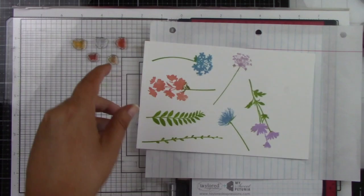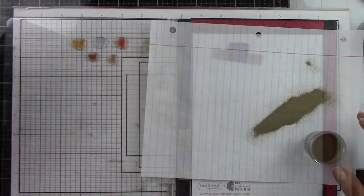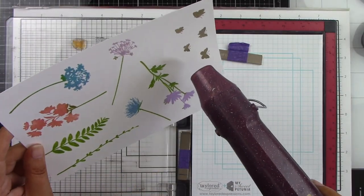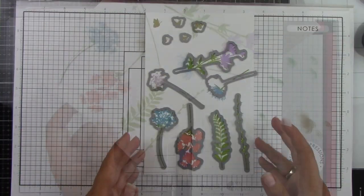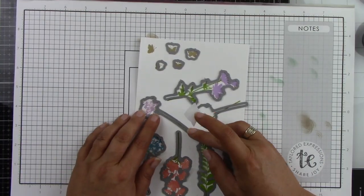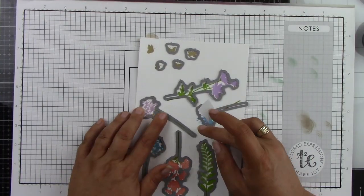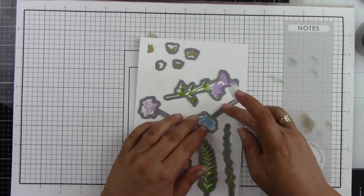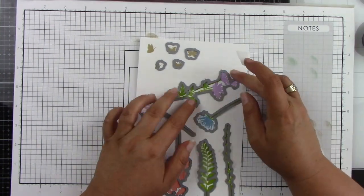I'm going to stamp those with Versamark ink, and I'm coming in with gold embossing powder. I'll sprinkle that on and then heat that until it's nice and melted. Then I'm going to use the coordinating dies to die-cut out all of these images. Again, I'm using low-tack tape to hold those in place, just lining those up around my images, and then I will run this through the die-cut machine.